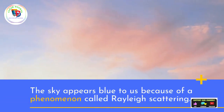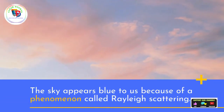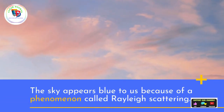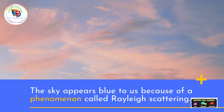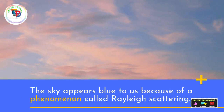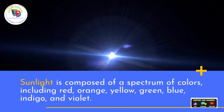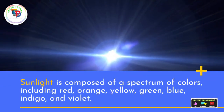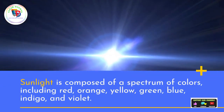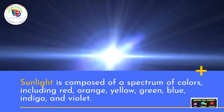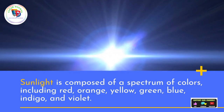The sky appears blue to us because of a phenomenon called Rayleigh scattering. Sunlight is composed of a spectrum of colors, including red, orange, yellow, green, blue, indigo, and violet.